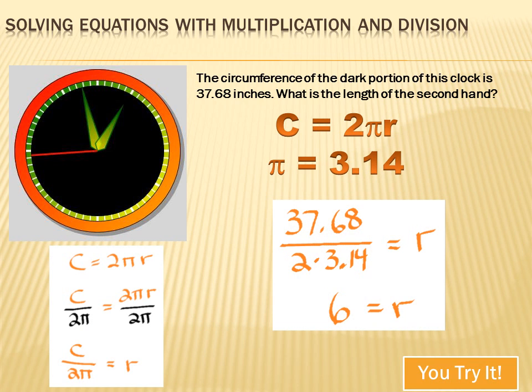I can just substitute this 37.68 for the C, as I did right there, and then calculate 2 times pi, or 2 times 3.14, and that would equal my radius. And when I did the math, 37.68 divided by 2 times 3.14 equals 6.